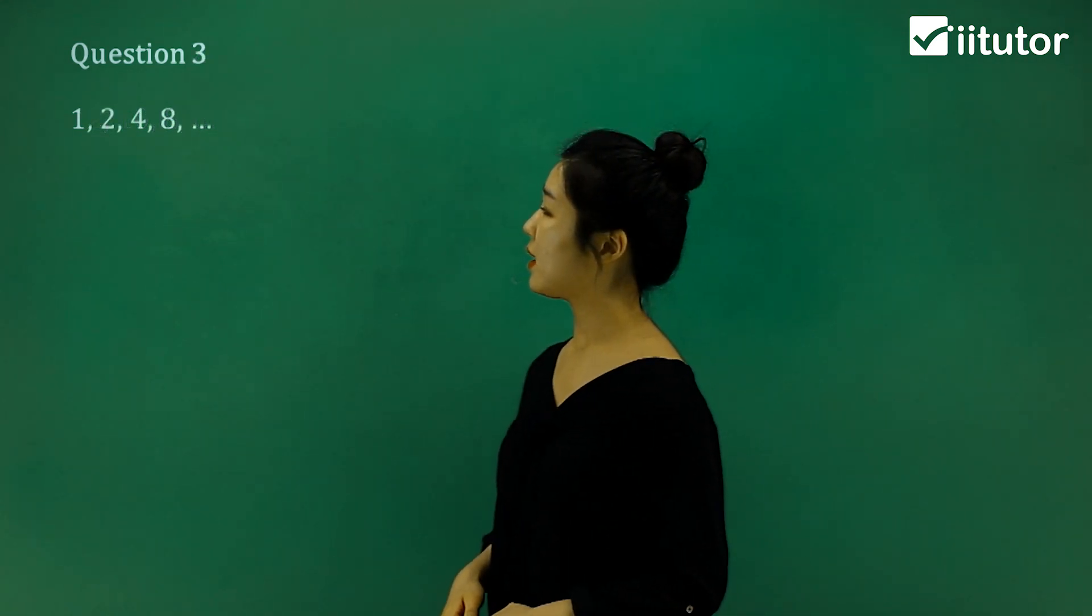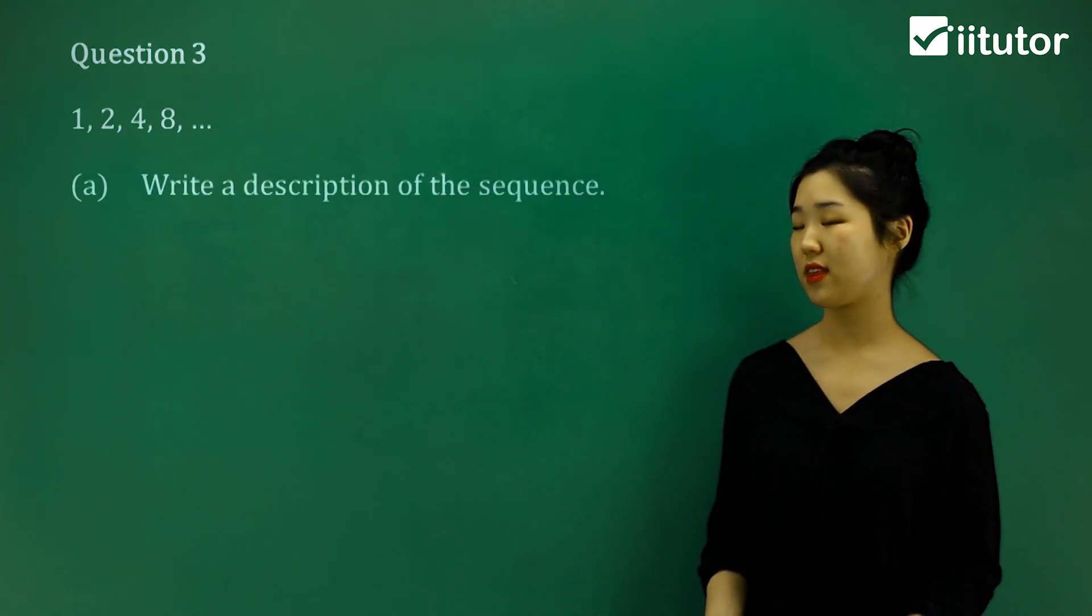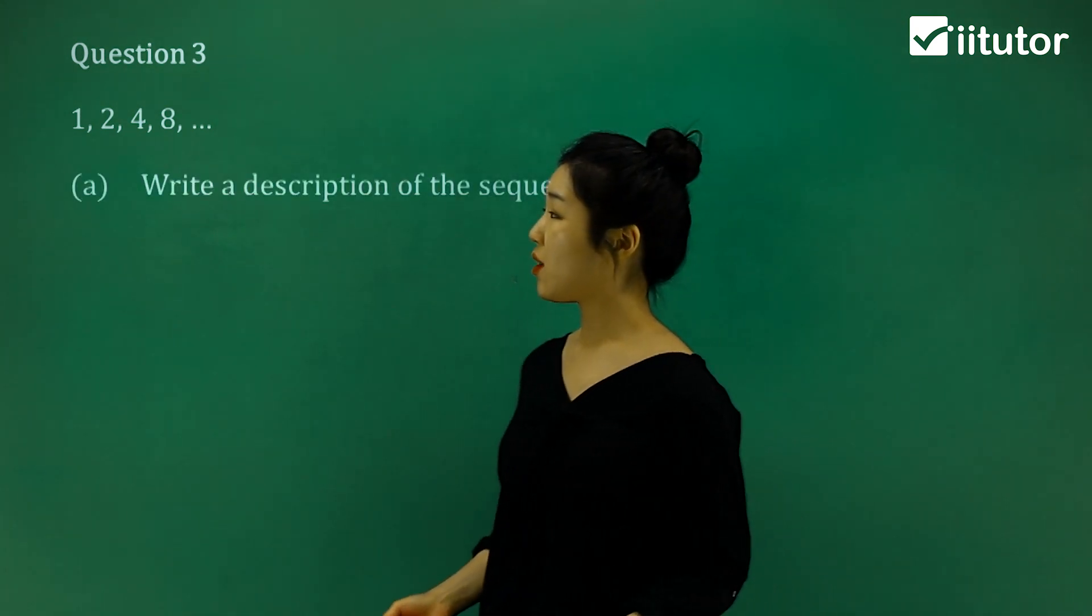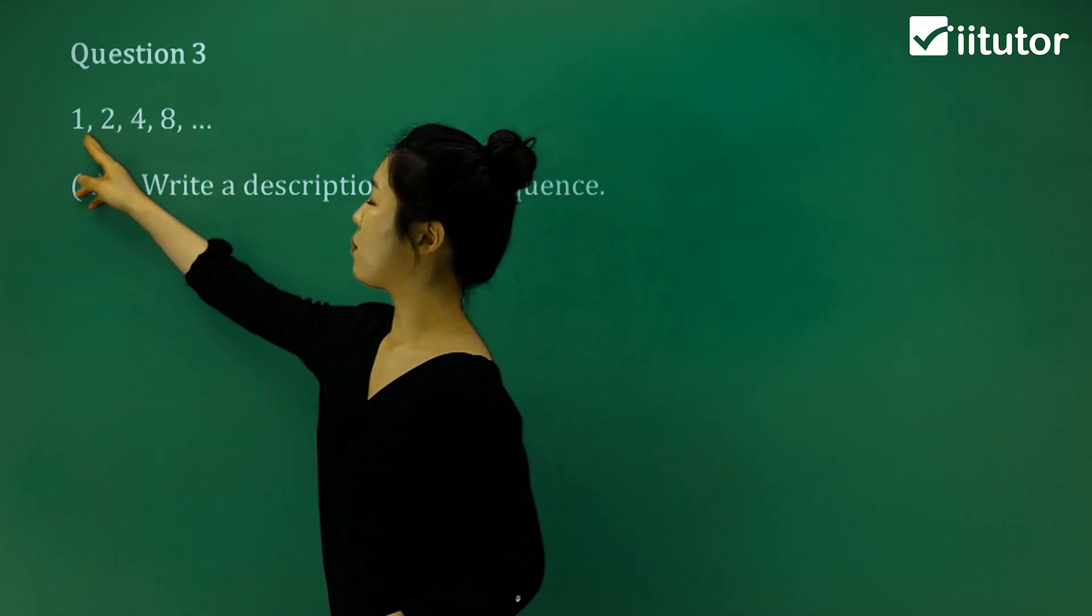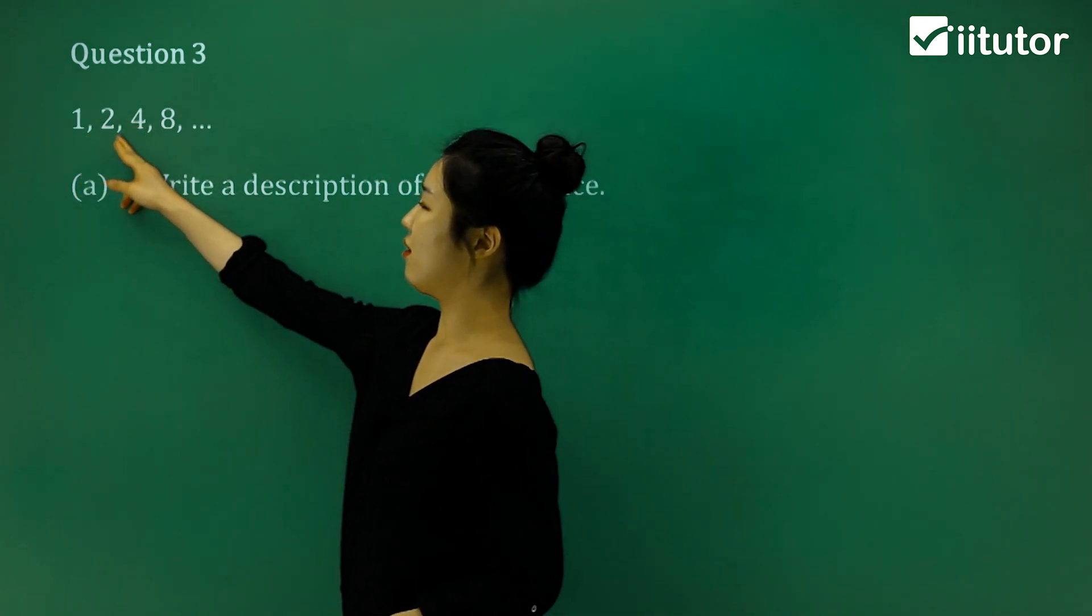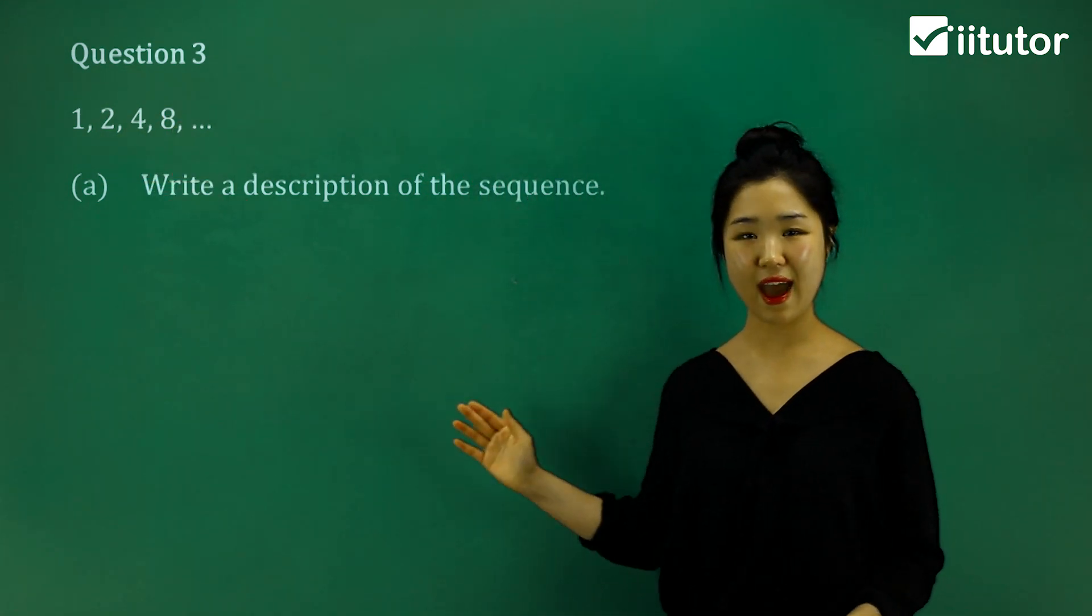Question 3. Again, we've got another sequence. 1, 2, 4, 8. So again, let's write a description for the sequence. The first term is clearly 1. The difference between 2 and 1 is 1. But the difference between 4 and 2 is 2. And the difference between 8 and 4 is 4. So definitely we know that we're not going to be adding.